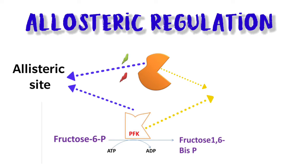Whenever AMP level is high, it indicates a low energy state. In such a condition, AMP binds at the allosteric site and increases or facilitates the binding of the substrate to the active site of the enzyme, thereby forming more product. This is how allosteric regulation takes place depending on cellular requirements — the signals here being ATP or AMP.